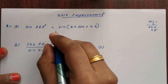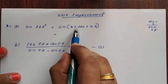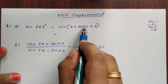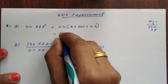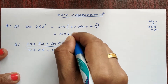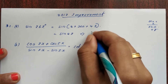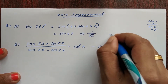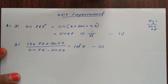So what do we think about this? It is 360 multiplied, so you can just keep it as sin 45.